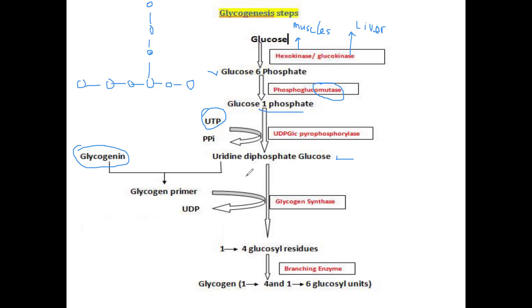The glycogenin primer is added to the activated form of UDP-glucose using an enzyme called glycogen synthase. Glycogen synthase adds glucose to the growing chain while simultaneously removing the UDP group. Once glucose is added, we have a growing chain of glucose residues, which can accumulate more glucose molecules, eventually forming glycogen.